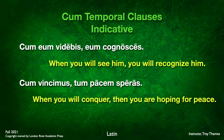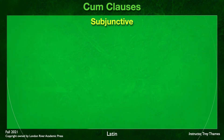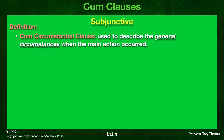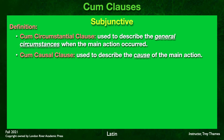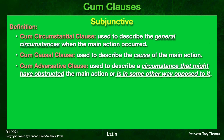Now let's look at cum clauses where the verb is in the subjunctive. There are three categories of subjunctive cum clauses. The first is the cum circumstantial clause, where the clause describes the general circumstances when the main action occurred. We also have the cum causal clause, used to describe the cause of the main action. And finally, the cum adversative clause, used to describe a circumstance that might have obstructed or is opposed to the main action.